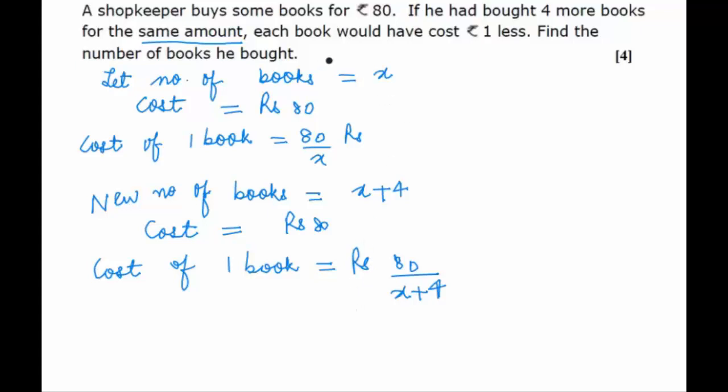Now they have told that the difference is of 1 rupee, therefore we can form the equation that 80 upon x minus 80 upon x plus 4 is equal to the difference in the price per book, this is equal to 1. Now this is a linear equation in one variable and we have to solve this.